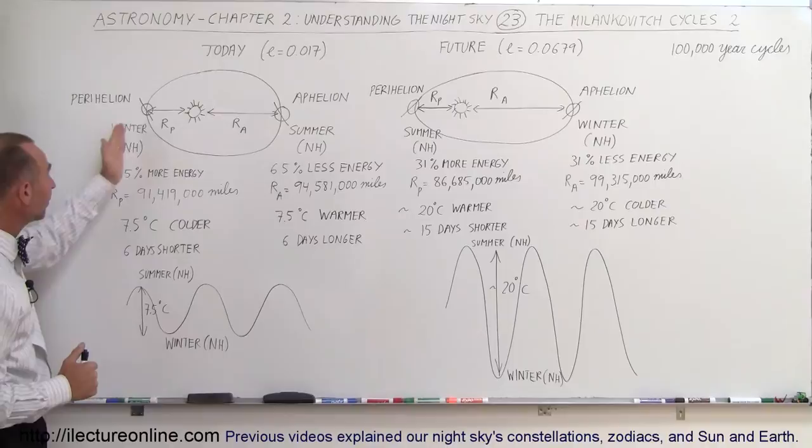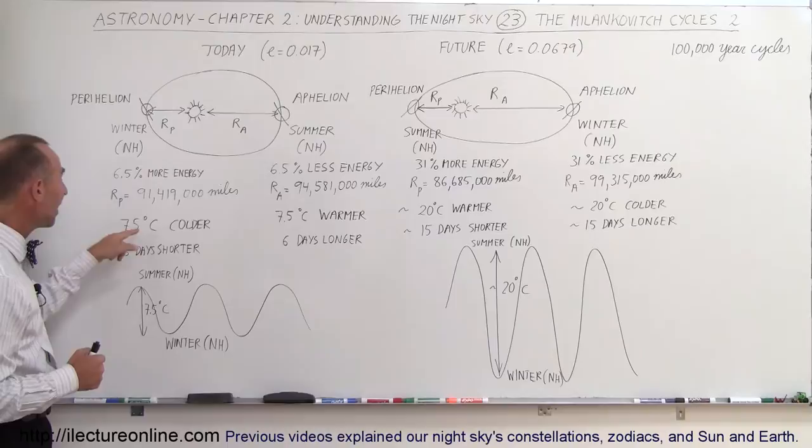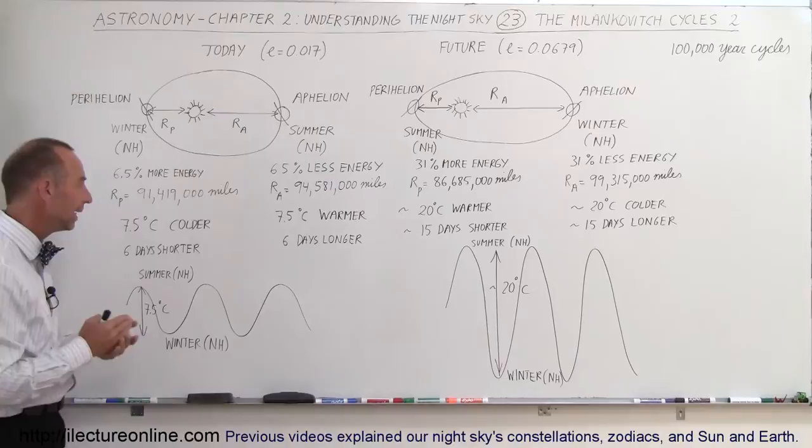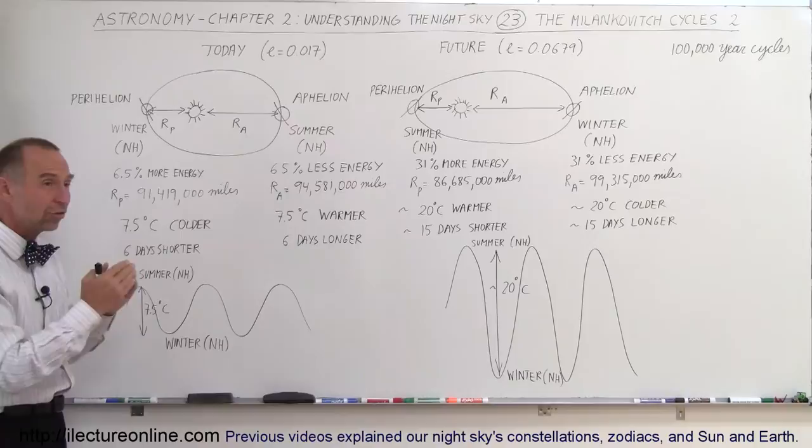And because of that, even though we're significantly closer during the winter in the Northern Hemisphere, the Earth is about 7.5 degrees Celsius colder, which is about 13.5 degrees Fahrenheit colder in our winters than in our summers. Which is amazing when you think about it.